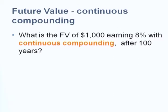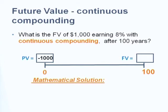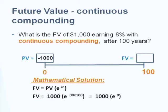Continuous compounding is the maximum possible compounding frequency. The formula is FV = PV × e^(i×n), where e ≈ 2.718. For example, the FV of $1,000 earning eight percent with continuous compounding after 100 years: FV = 1000 × e^(0.08 × 100) = approximately $2,980,000.